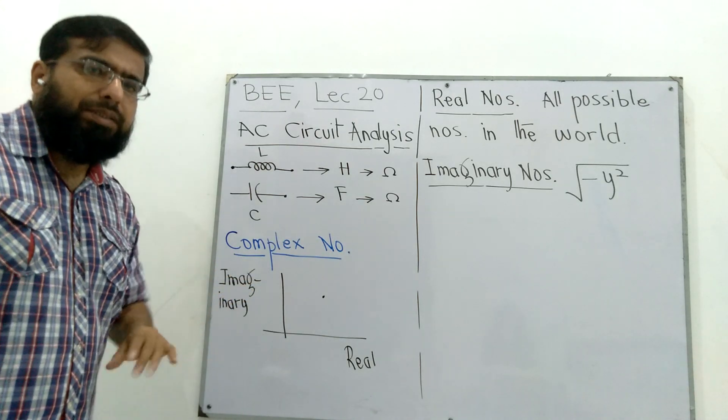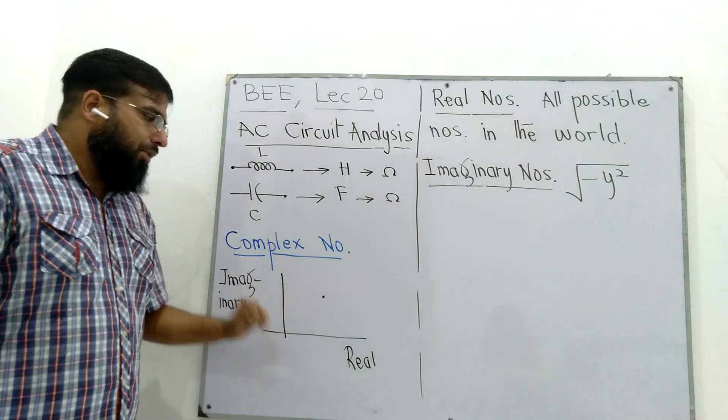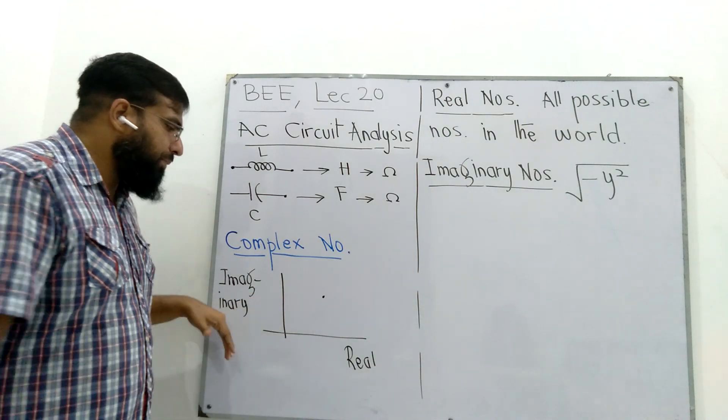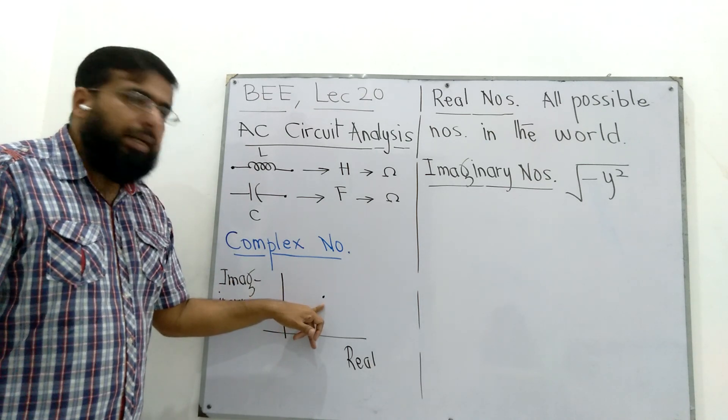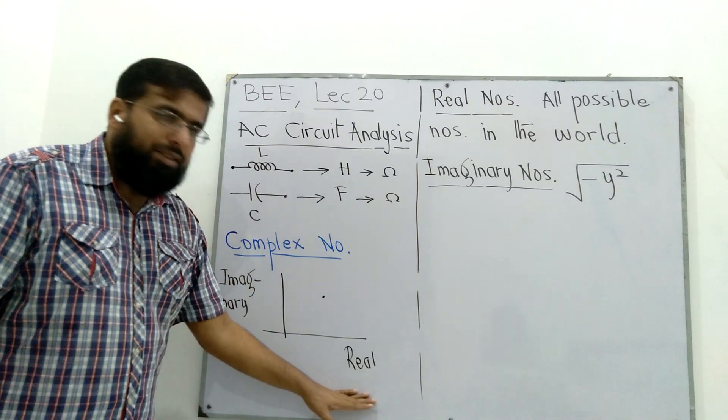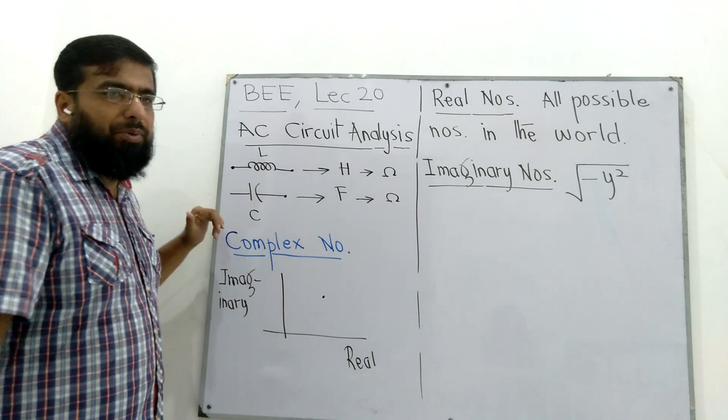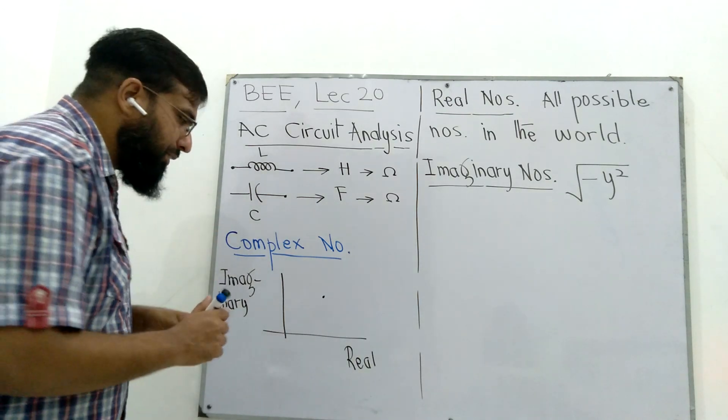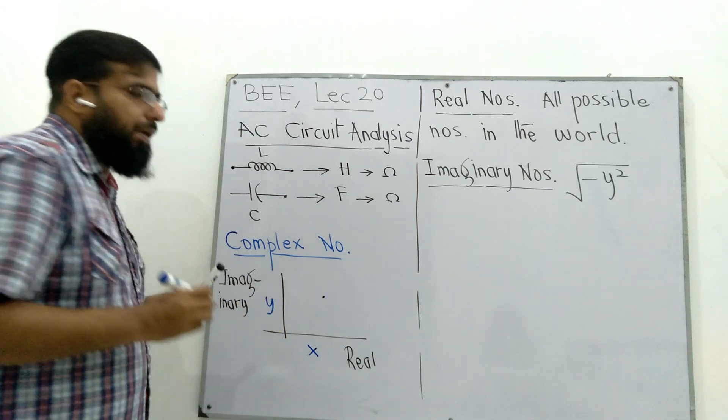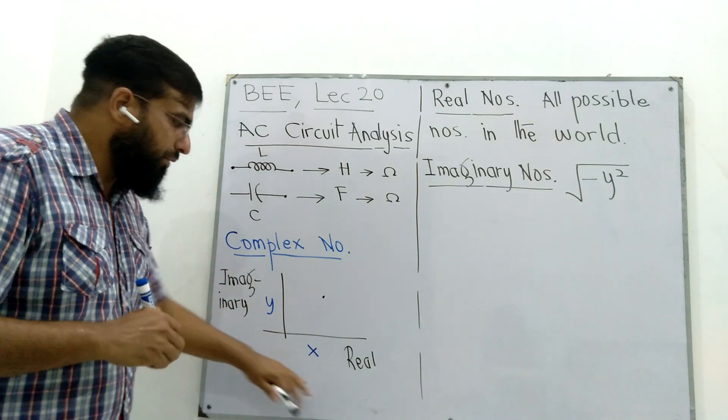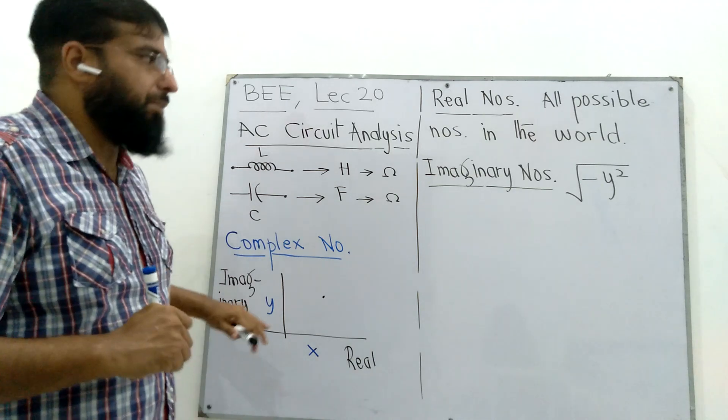We have already studied complex numbers in elementary classes. A complex number is a composite number containing a real and imaginary part. It can be drawn as a point in a plane where on x-axis we plot real part and y-axis we plot imaginary part. In most cases, we call the real part as x and imaginary part as y. What's the difference between a real and imaginary part?